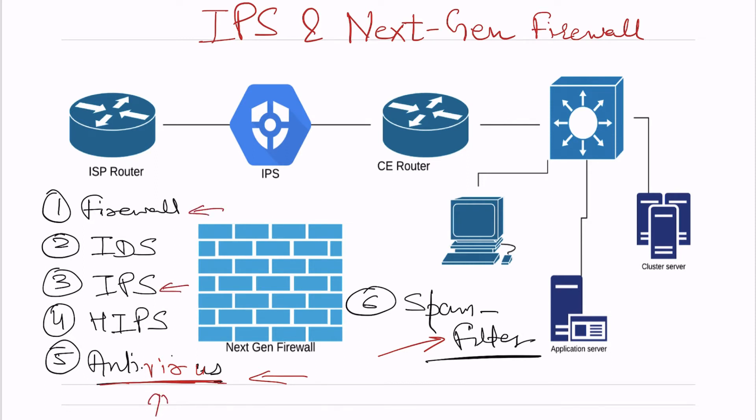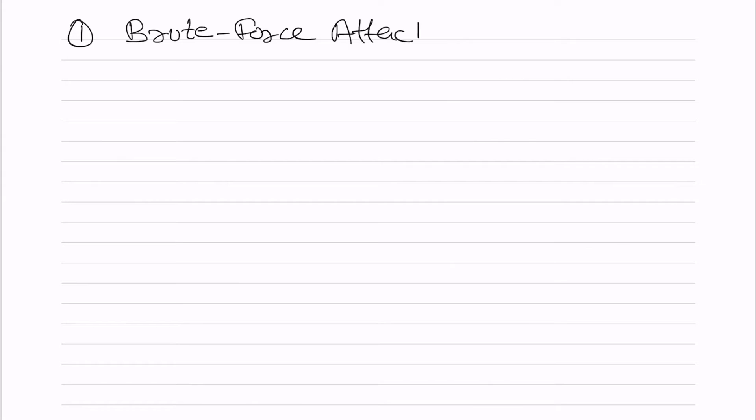IDS is very similar to IPS — in fact IPS is an advanced form of IDS. IPS is like IDS plus policy enforcement. IDS is basically used for detection only. It detects brute force attacks that happen in your environment. IPS does the same detection but also prevents those attacks — IDS detects but does not prevent.